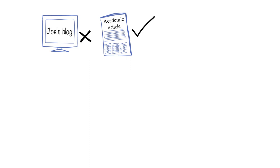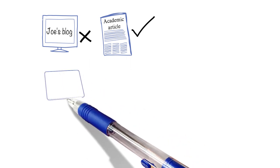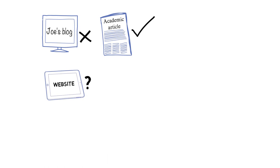The appropriateness of some sources is less clear-cut. Websites or YouTube videos, for example, can be official or reputable but can also be unofficial and disreputable.